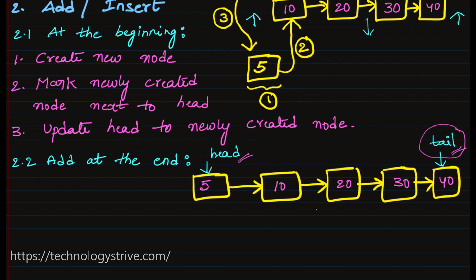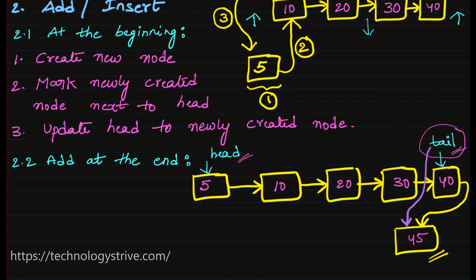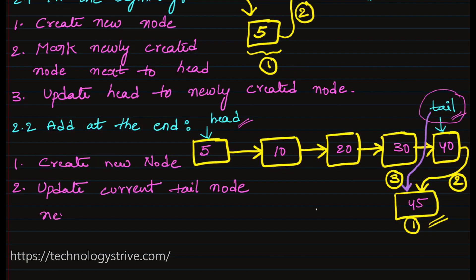Even when adding at the end, first we create a new node with a given value — assume 45. Because this has to be the end of the linked list, we have to insert this node as part of the linked list. So the last node's next should point to 45 — update 40's next to 45. Then, currently the tail node is pointing to 40, but after inserting 45 this has to become our last node. So update tail from 40 to 45. Steps: Step 1 — create new node. Step 2 — update current tail node's next to newly created node. Step 3 — update tail node to newly created node.